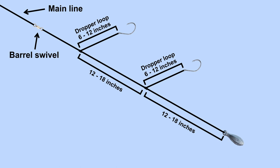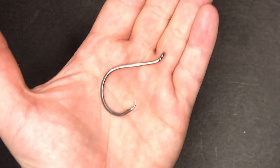If I have multiple droppers, I'm going to space them out about 12 to 18 inches. And with the last dropper, I'm going to tie it about 12 to 18 inches above the sinker.